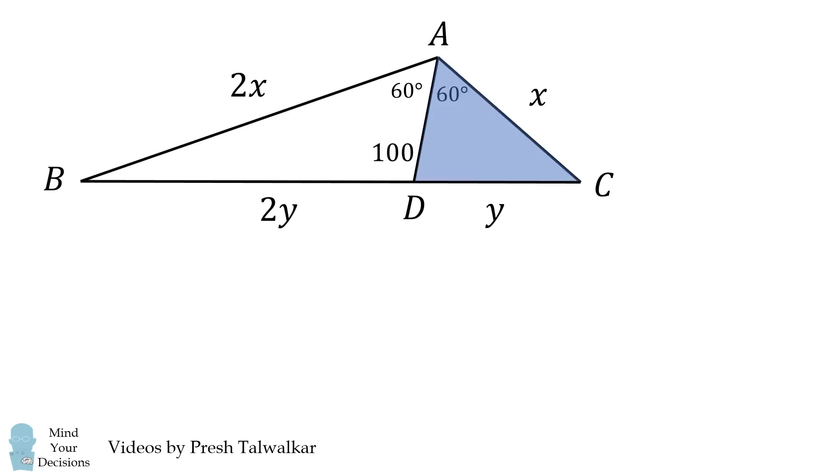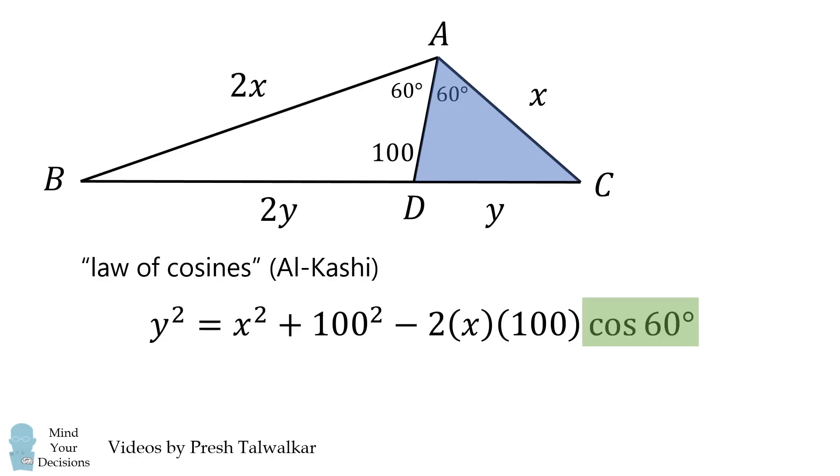Now we're going to use Al-Kashi's theorem. y squared will be equal to x squared plus 100 squared minus 2 times x times 100 times the cosine of 60 degrees. Since the cosine of 60 degrees is equal to 1 half, we'll simplify this. We'll put this equation to the side.